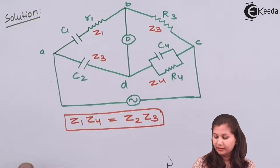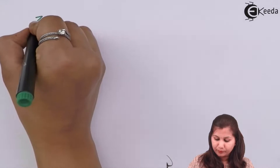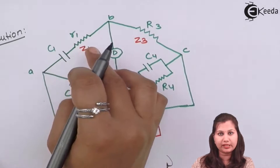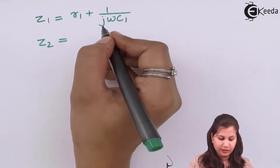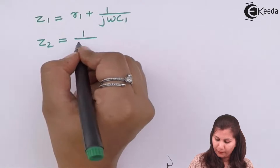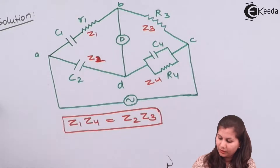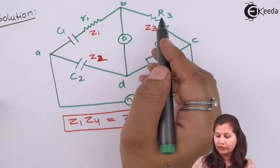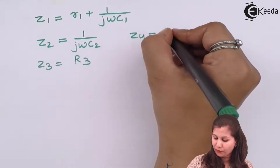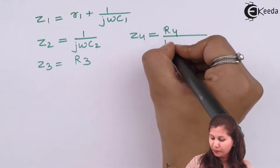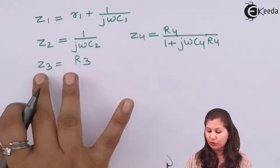We will write the impedance values in the various arms. Z1 is the series combination of the capacitor and resistance: R1 + 1/(jωC1). Z2 is the capacitor: 1/(jωC2). Z3 is the resistance R3. Z4 is the parallel combination of R4 and C4: R4 / (1 + jωC4·R4).